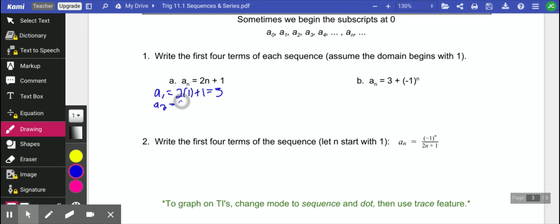If we want to find the second term, we are going to plug in 2. To find the third term, plug in 3. And to find the fourth term, plug in 4. So the sequence is 3, 5, 7, 9. And it keeps going. Those ellipse dot, dot, dot just means it keeps going.